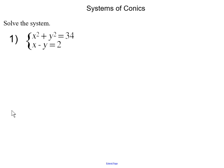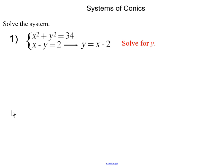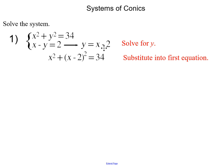This is our original problem. What I did first is I used the second equation to isolate my y variable — solve for y — and I substituted it into the first equation. That gives me x squared plus the quantity (x minus 2) squared equals 34. I then FOIL that out, giving me x squared plus x squared minus 4x plus 4 equals 34.